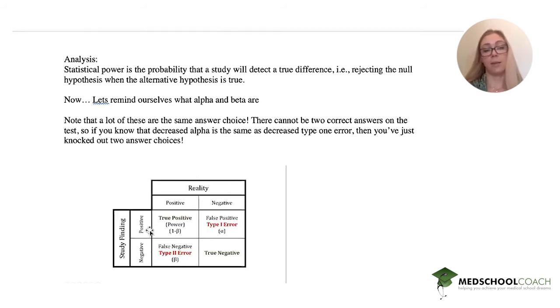Now if the study findings are positive but the reality is negative, that is a false positive. In reality, it's not true. So the study falsely found something is true, that's false positive. It is a type 1 error also known as alpha. And then if something is negative and we found the study is negative, then it's a true negative.